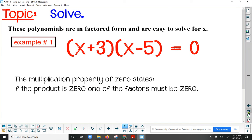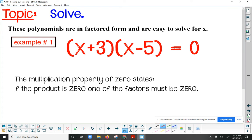So here's an example of a factored polynomial. These polynomials are in factored form, which means that they are two things that multiply together. That's what factors are. Two things that multiply together to give you a product.